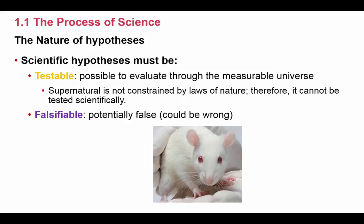A couple things we know about hypotheses. First, a hypothesis must be testable — we have to be able to evaluate it to determine if it's supported or not. The key is you have to evaluate it using the measurable universe, collecting actual numbers and data. Supernatural reasons, like psychic energy or religious explanations, cannot be tested through the measurable universe. The other qualifier is that it's falsifiable — with any proposed explanation, there has to be the potential that you could be wrong.